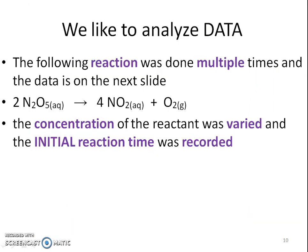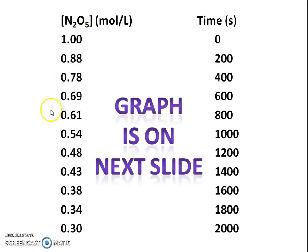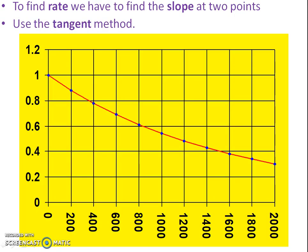We like to always analyze this data. The reaction was done multiple times, and we have data for N2O5 turning into NO2 and O2. The concentration of the reactant was varied, and the initial reaction rate was recorded. These are the concentrations, this is the time measured right away, and this graph is what's produced. To find rate, we have to find the slope at two points — we're going to use the tangent method.